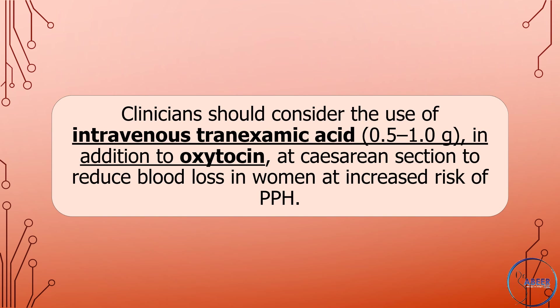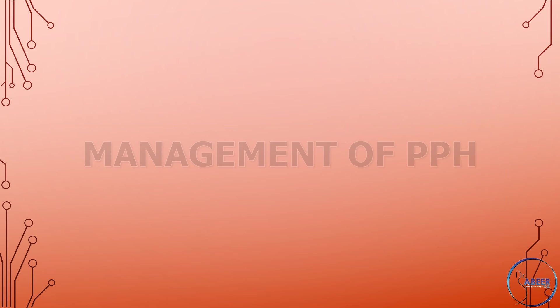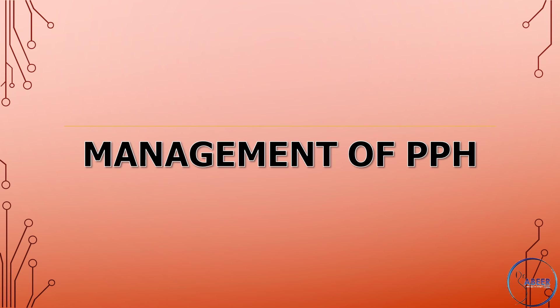Clinicians should consider the use of intravenous tranexamic acid, 0.5 to 1.0 grams, in addition to oxytocin, at cesarean section to reduce blood loss in women at increased risk of postpartum hemorrhage.